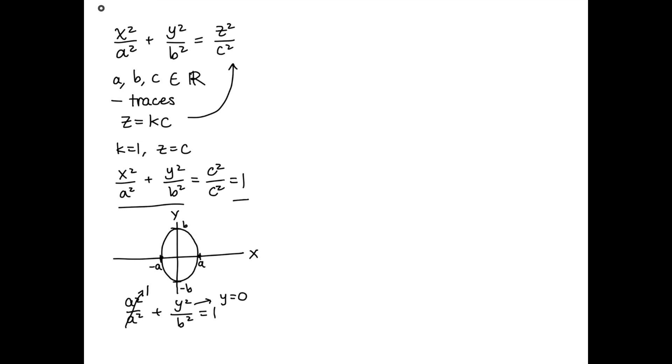But what does it mean now that we've plugged in z is equal to c? It means that this ellipse is actually at some height along the z-axis, where the height is going to be c.